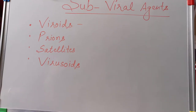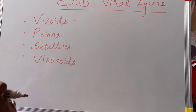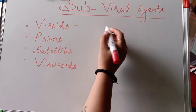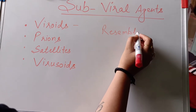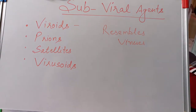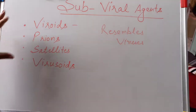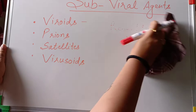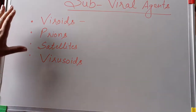Today we are going to discuss sub-viral agents. Sub-viral agents are those particles or microorganisms which resemble viruses in some of their properties, but are not exactly viruses. The four examples are: Viroids, Prions, Satellites, and Virusoids. We will discuss the differences between these four clearly.